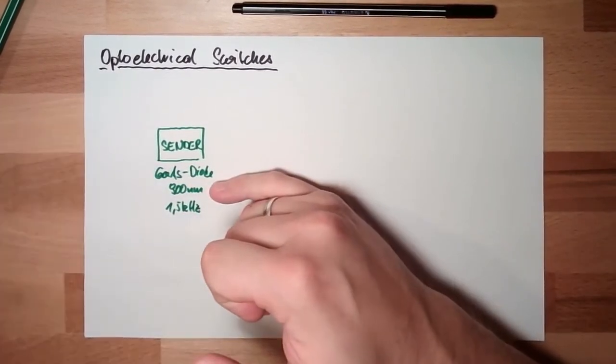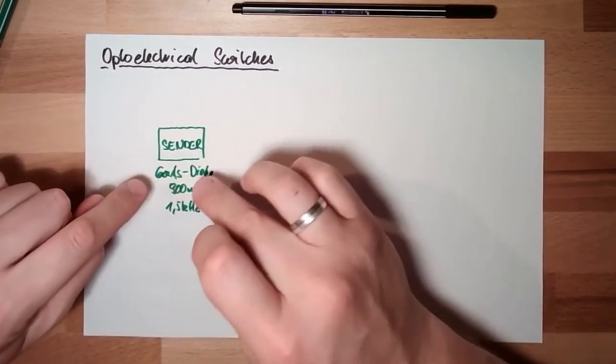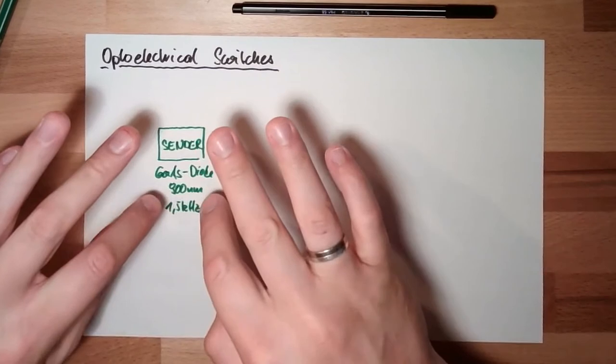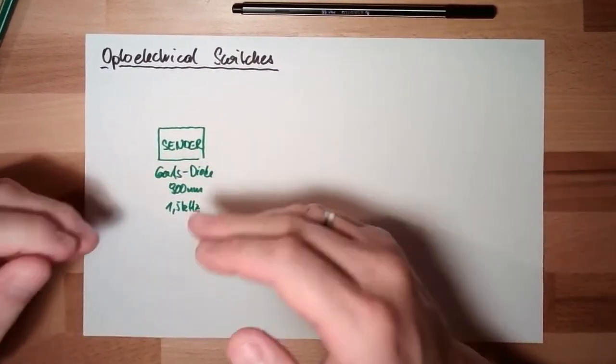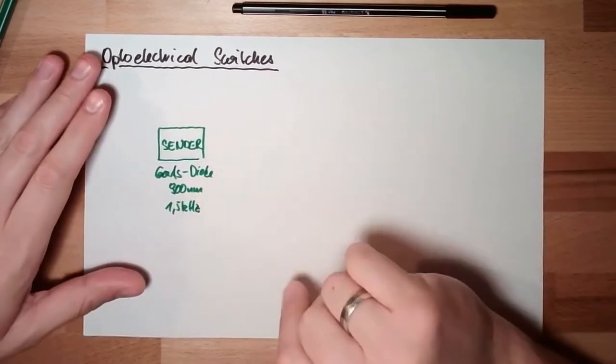And the sender is sending out light. So this is a laser diode. Think about an LED, a special form of LED. Gallium arsenide with 900 nanometer wavelength. So an infrared beam and it's pulsed with around 1.5 kilohertz.